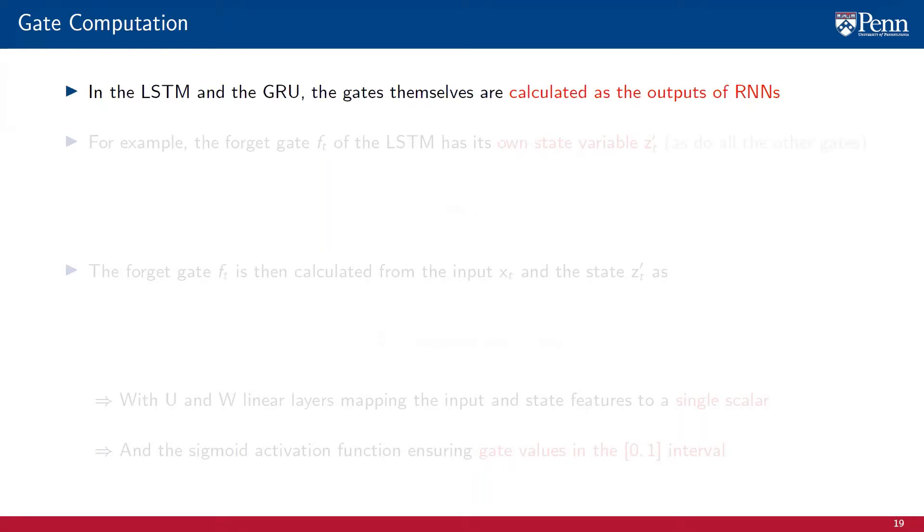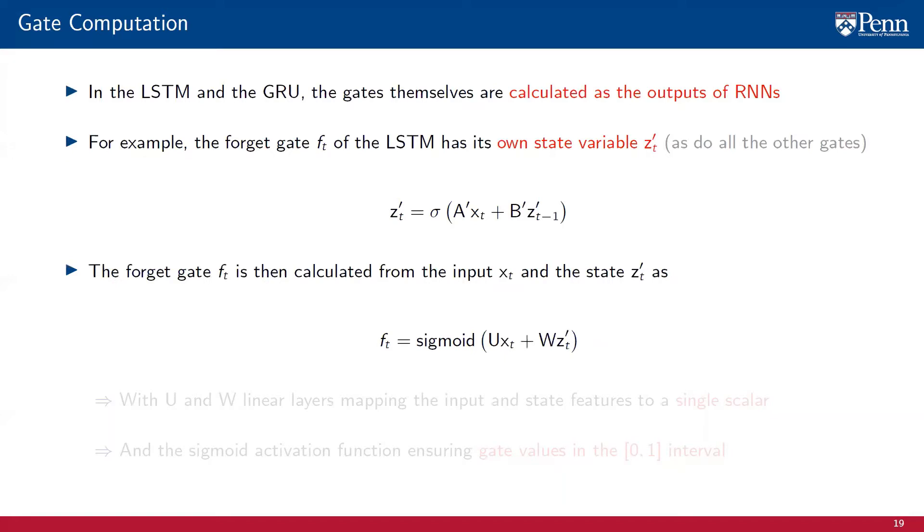Note that, in long-short-term memory cells and gated recurrent units, the gates themselves are calculated as the outputs of recurrent neural networks. For example, the forget gate of an LSTM cell f_t has its own state variable z that is updated by a recurrent neural network. That is, at each time instant, the internal state variable of the forget gate z is computed by the computation of a pointwise nonlinearity on the linear combination of the input x_t and the previous value of the internal state z. Given the updated internal state z, the forget gate f_t is then computed from the input x and the internal state z as a sigma nonlinearity applied to a linear combination of the input x and the internal state z. Here, U and W are both linear layers mapping the input and the state features to a single scalar. And the sigmoid activation function ensures that the gate values f_t remain on the unit interval.